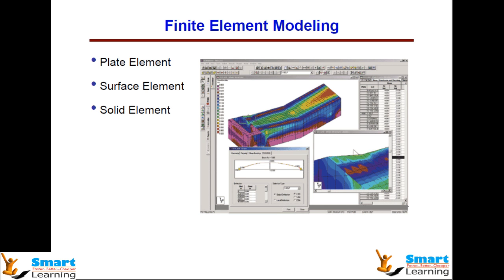We have column structures, beam structures, plate structures, slab structures, and surfaces that we can use for walls, and we have solid structures. In these different types of structures you can have different properties, and you can control, design, and do the validation on your structural analysis.